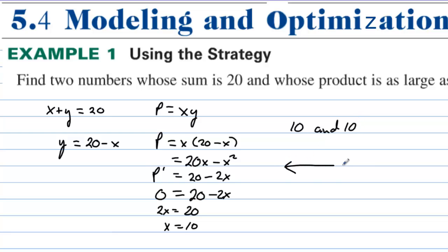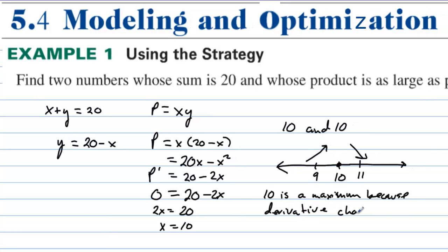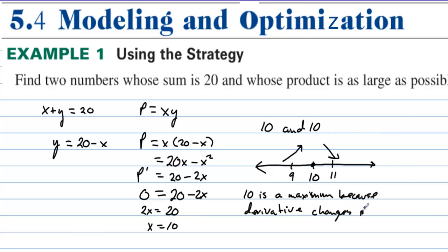Now if you are asked to prove or justify that you've actually found the maximum, we set 10 on the number line and test 9 and 11 in the derivative. Plugging 9 in we get 20 minus 18, which is positive, so the function is increasing to 10. Plugging in 11 we get 20 minus 22, which is negative. So the function increases to 10 and then decreases, making 10 the maximum. To justify: 10 is a maximum because the derivative changes from positive to negative.